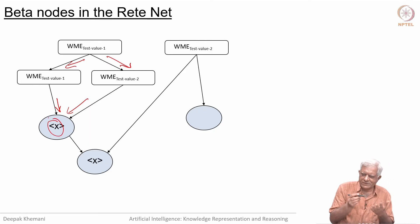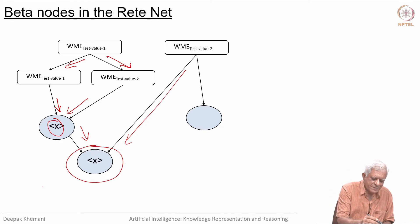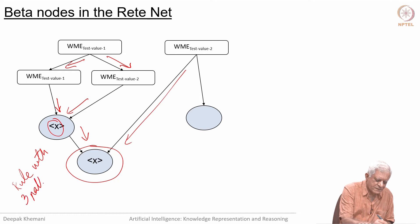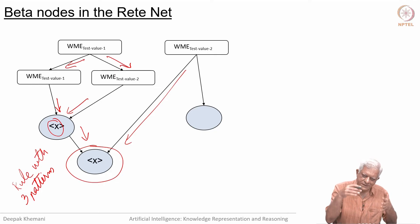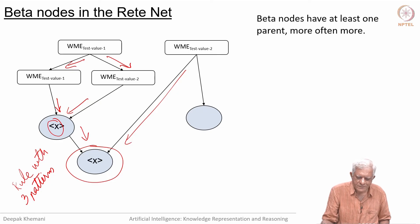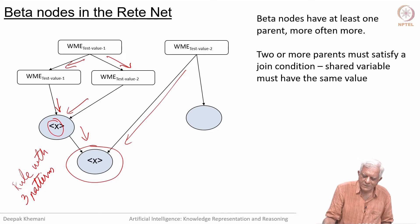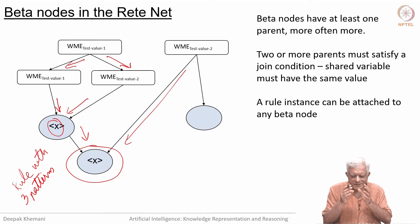Typically there is a join based on the value of the variable, and then you have a compound token that traverses further and may match a third element. This node represents a rule with three patterns, and this rule would be satisfied if three working memory elements were inserted into the network and eventually got together at this place where we know those three patterns are being matched. Beta nodes have at least two parents that must satisfy some joint condition, and a rule instance can be attached to any beta node.